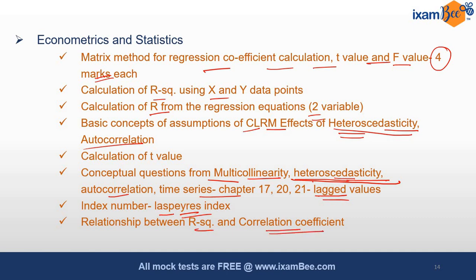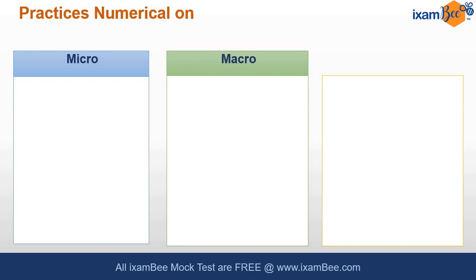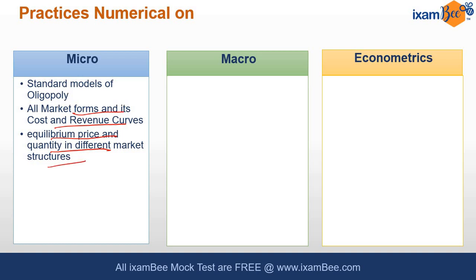Econometrics and statistics is about one third of the exam. If you are not good at this, please learn it — otherwise you won't be able to crack the exam. Practice numericals on micro, macro, and econometrics: standard models of oligopoly, all market structures, cost and revenue curves, equilibrium price and quantity in different market structures.